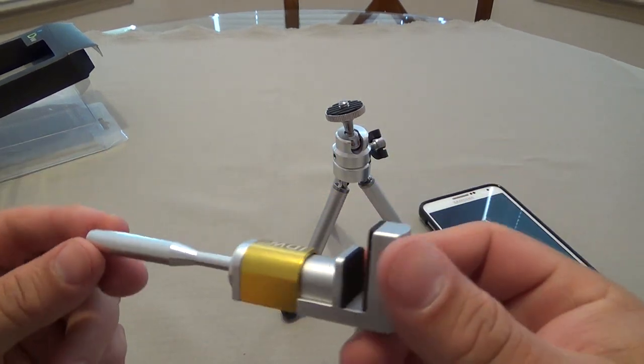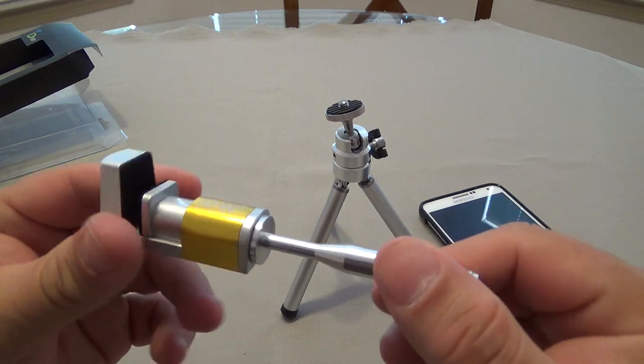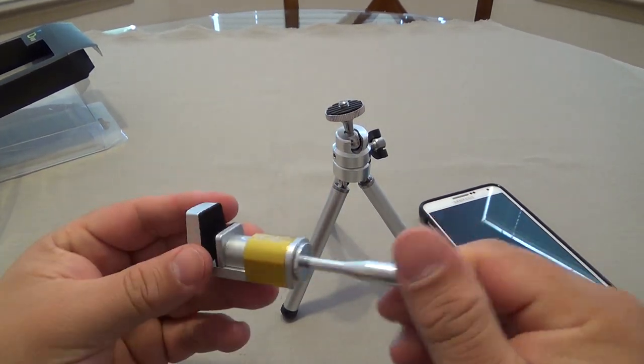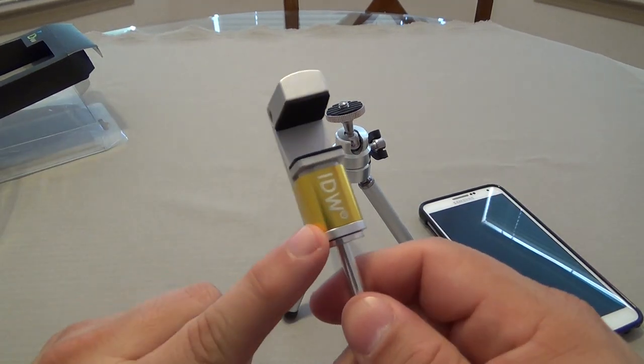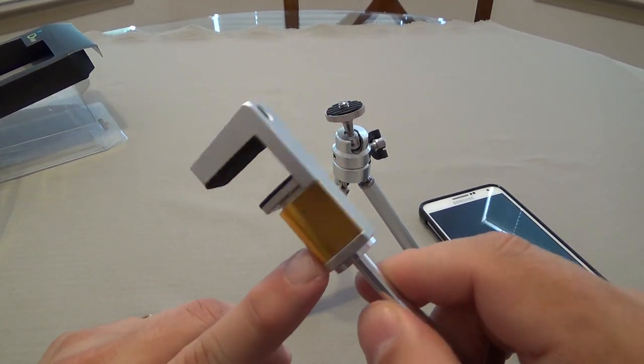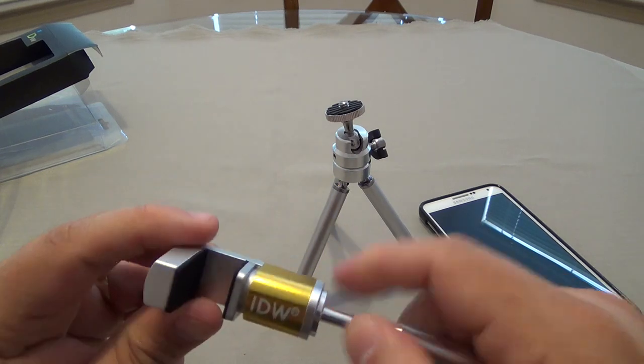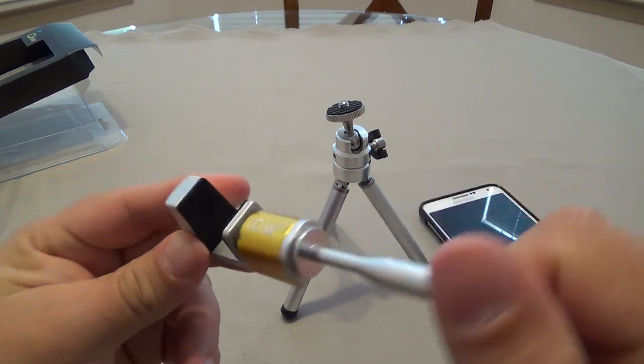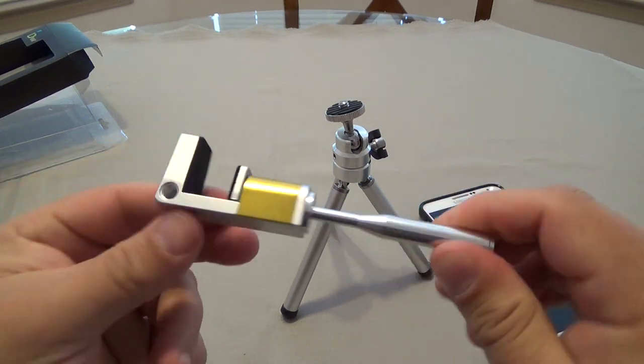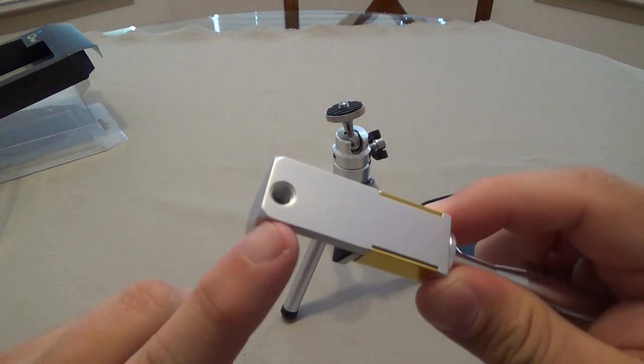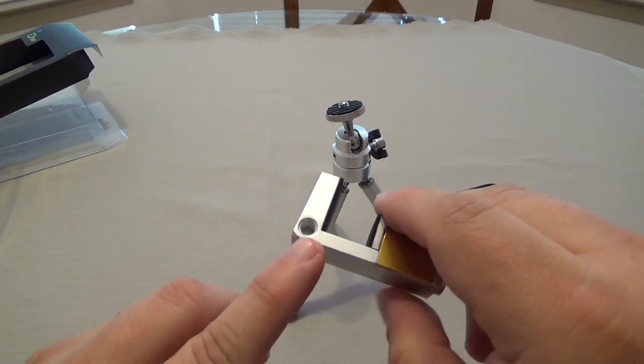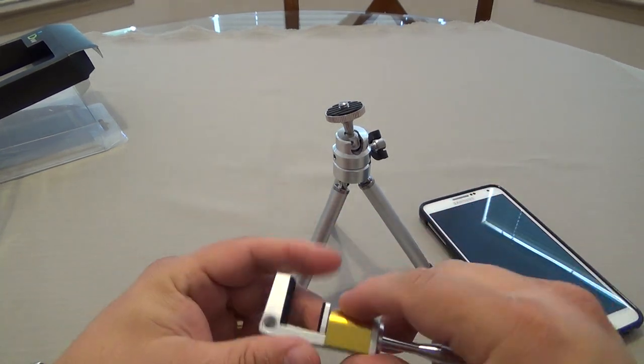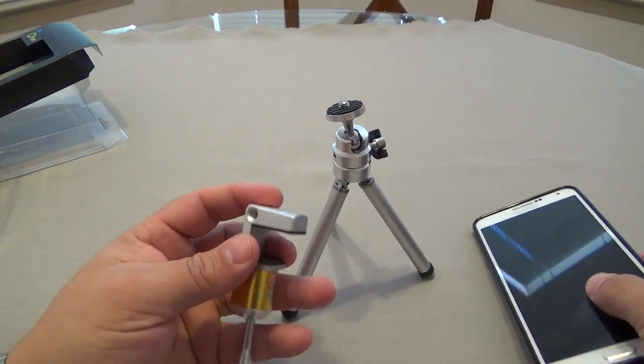And over here, which is the thing most important in this package, this mount you can actually use on any tripod that you can think of. This comes in different colors as well. This is the gold or yellow color, and it also comes in blue, gray, green, and maybe even pink. Over here, tripod mount right here and another tripod mount right there, depending on the angle that you want to use.